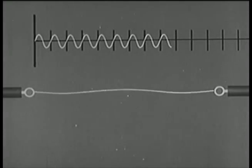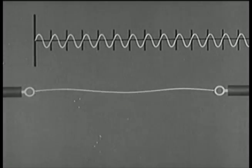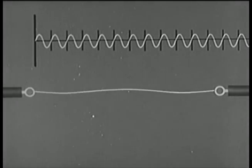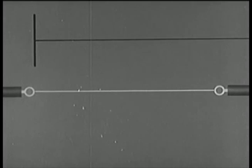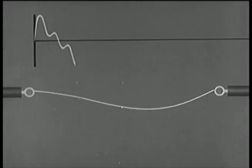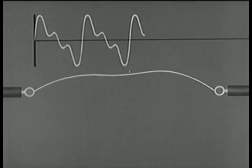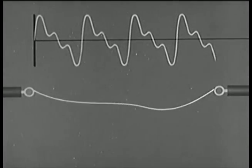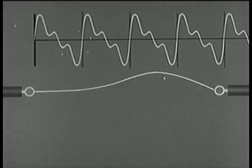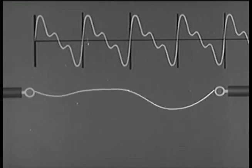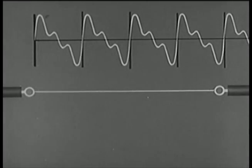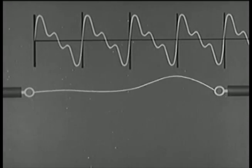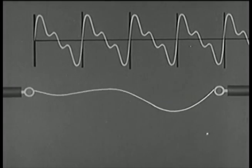When the string vibrates in three segments, it produces its second overtone, the third partial. Here, the frequency is three times that of the fundamental. But usually, several different modes of vibration occur simultaneously. The result is a compound waveform. Here, we represent the fundamental tone supplemented by its first and second overtones. Differences in the audible components of a sound determine its quality. Quality helps us recognize the characteristic sounds of various musical instruments and distinguish one voice from another.